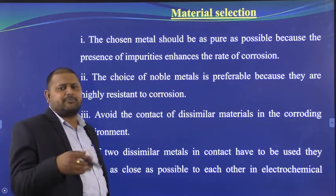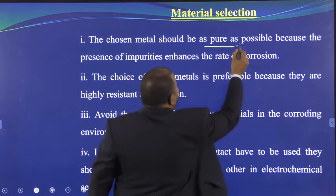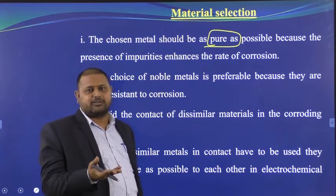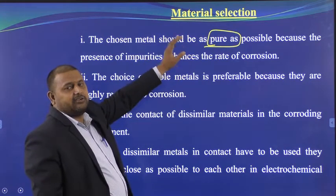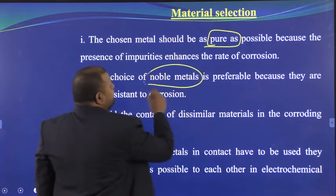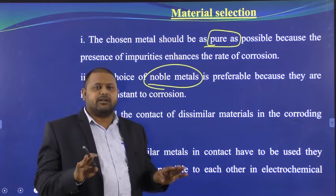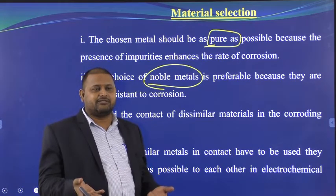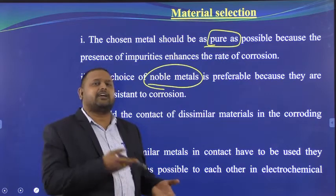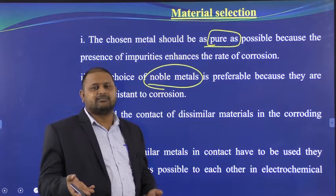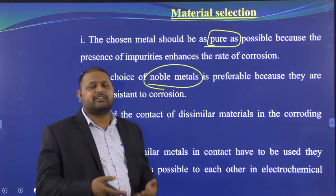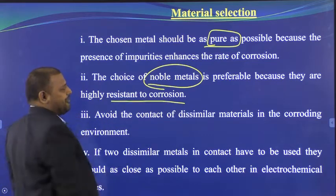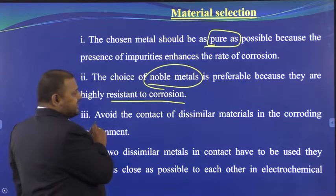For material selection: first, choose a metal that is as pure as possible, because highly pure metals are less prone to corrosion. Second, prefer noble metals — they are resistant to corrosion. For instance, gold is a noble metal that does not rust, whereas zinc is very easily prone to corrosion and should not be used for structural purposes.